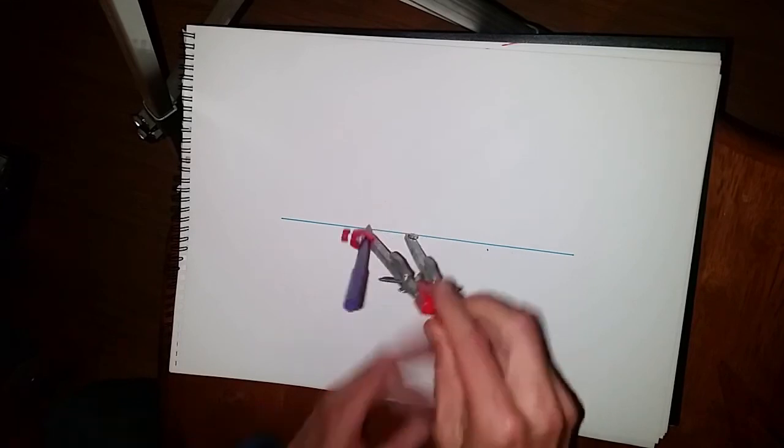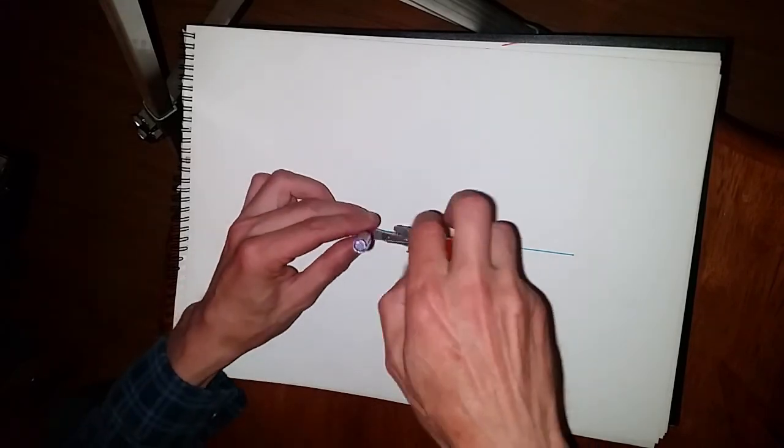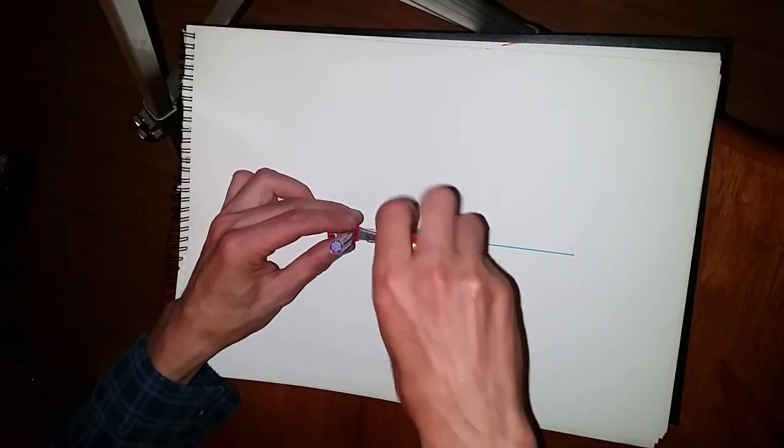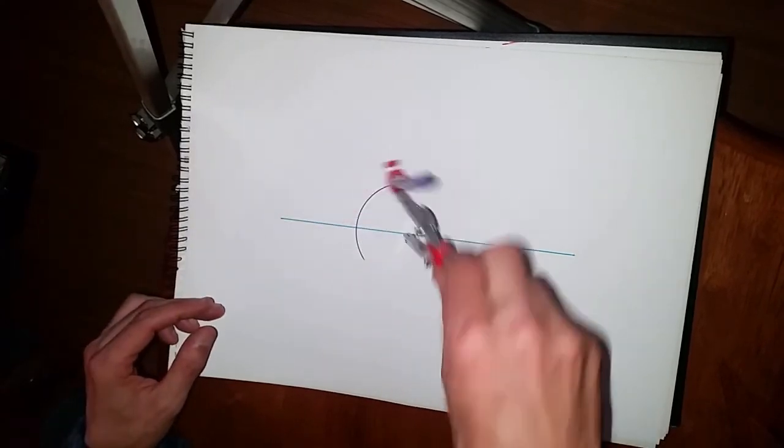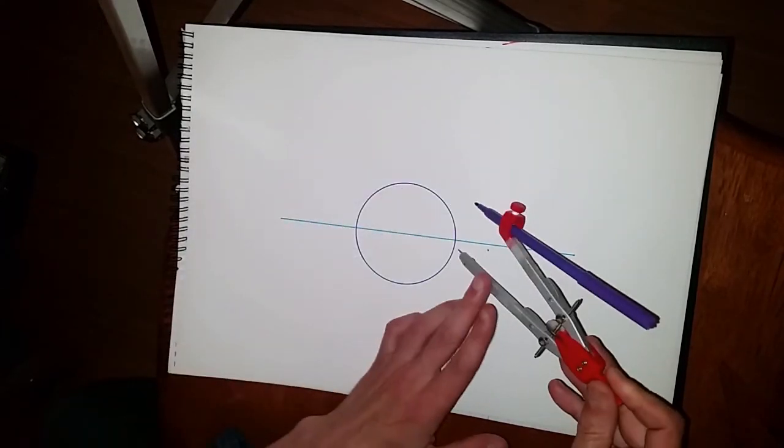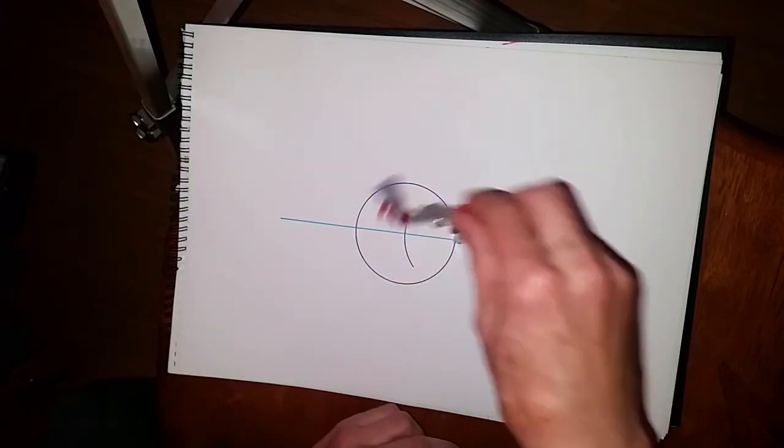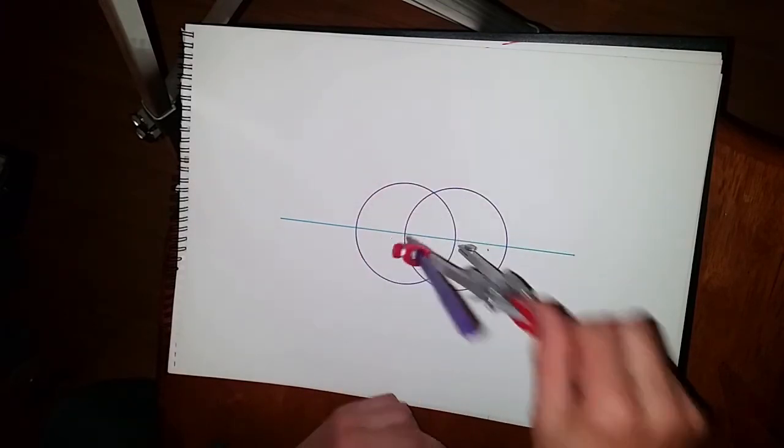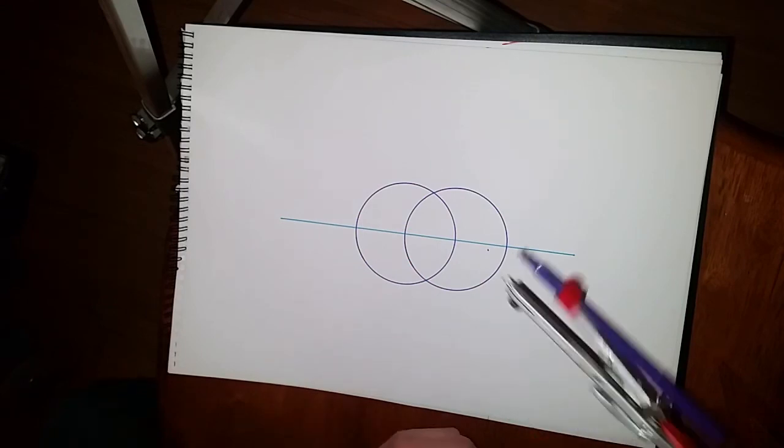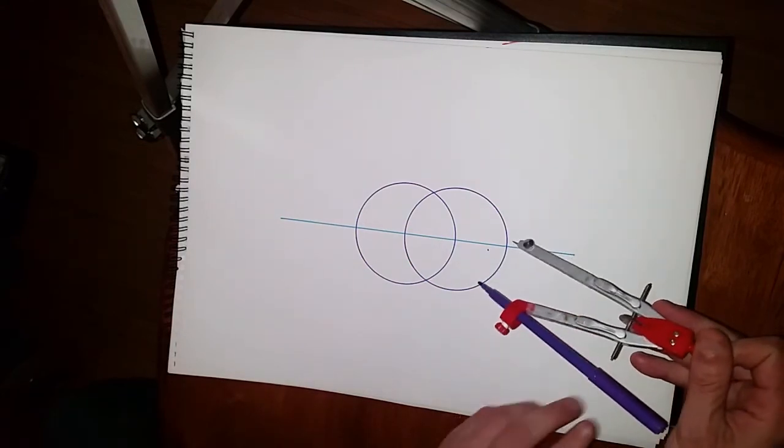And now we draw the Vesica, so it's two circles of equal size using that construction line. Make it a little bit larger so I have enough room to do the complete construction. One circle, the second circle of the same size, with its center on the edge of the first. So that's the Vesica Pisces, Vesica Piscis as it's called, the vessel of the fish.